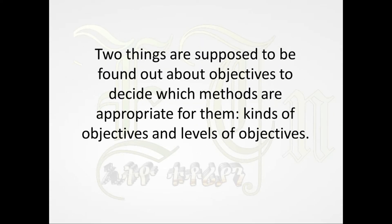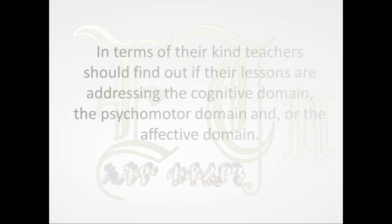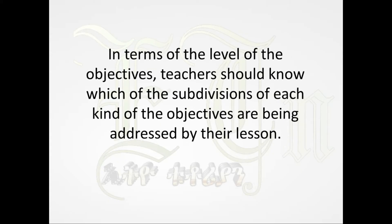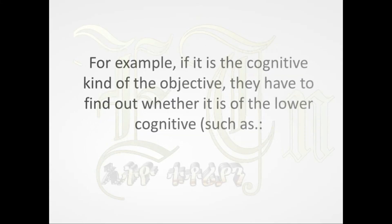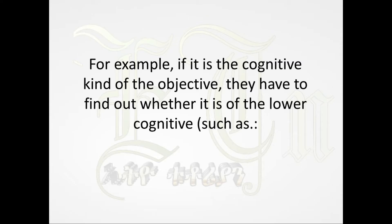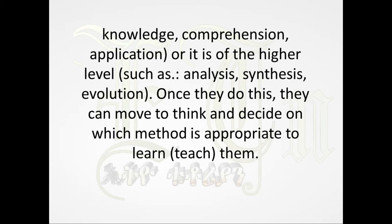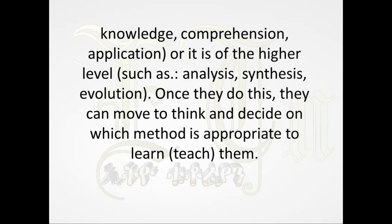Two things are supposed to be found out about objectives to decide which methods are appropriate: the kinds of objectives and the levels of objectives. In terms of kind, teachers should find out if their lessons are addressing the cognitive domain, the psychomotor domain, and/or the affective domain. In terms of level, teachers should know which subdivisions are being addressed — for example, lower cognitive levels such as knowledge, comprehension, and application, or higher levels such as analysis, synthesis, and evaluation — and then decide which method is appropriate.